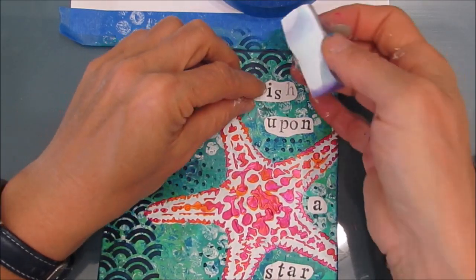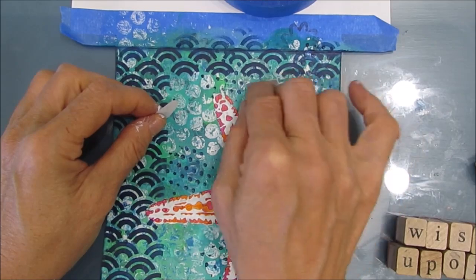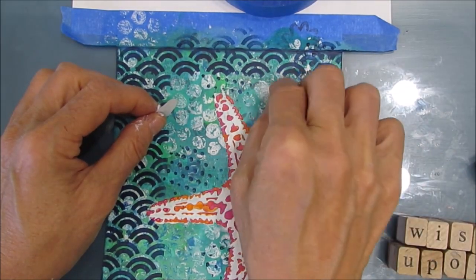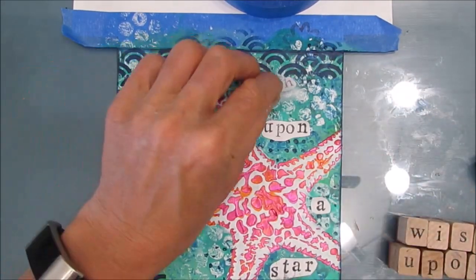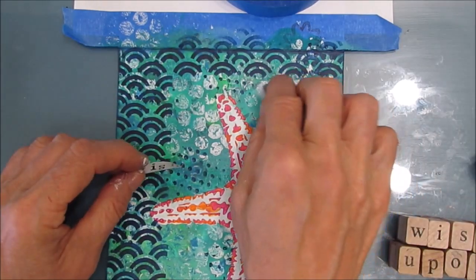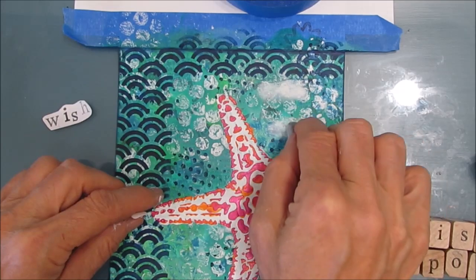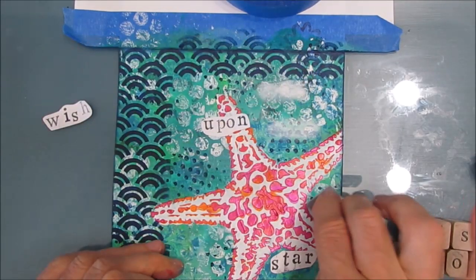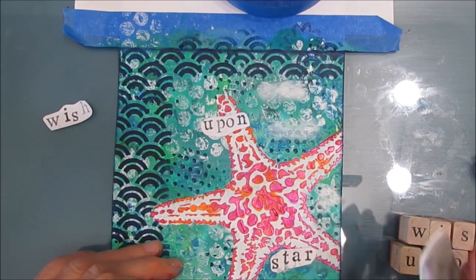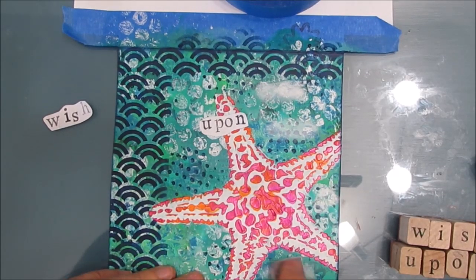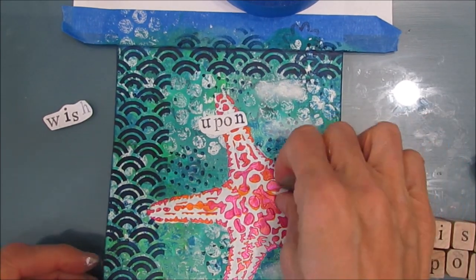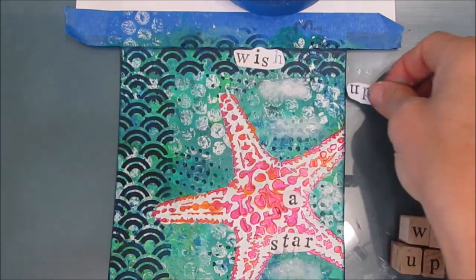Now I want to stamp a sentiment on here. I'm using my little wooden alphabet stamps. Because I really want to make sure it stands out and the background's a little busy, I'm taking a makeup sponge with some white gesso and just whiting out the pattern a little bit to hedge the bets.